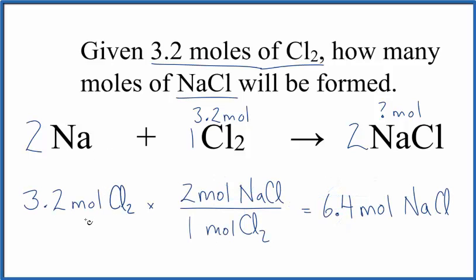So we start out with our 3.2 moles of chlorine, and we multiply by what's called a mole ratio. The way we set our mole ratio up is we want moles to be on top and on the bottom so they'll cancel out. And you can think of this as 3.2 over 1 moles of Cl₂. So now when we multiply, the moles are going to cancel out. We're going to be left with moles of NaCl. That's what we want.